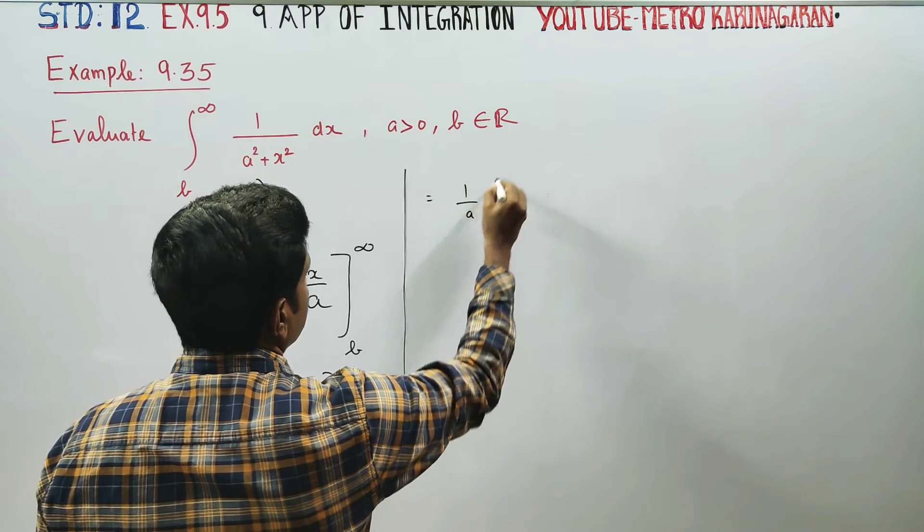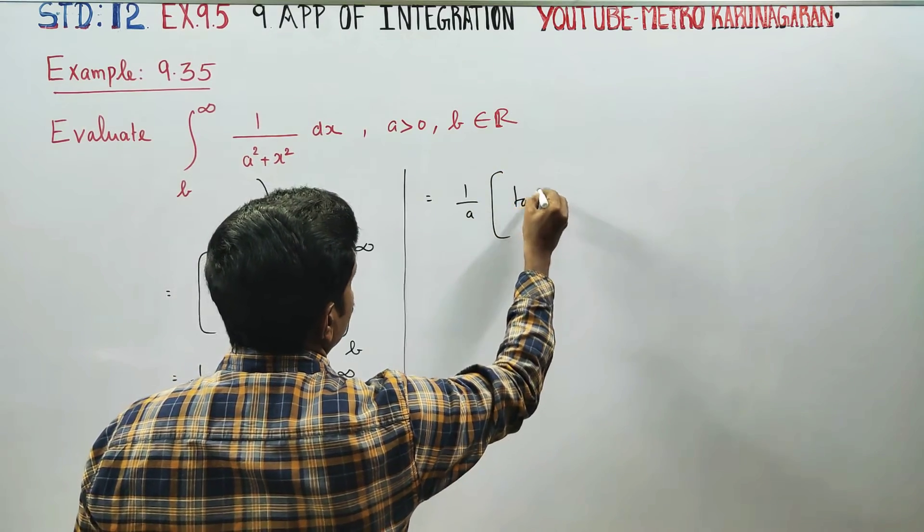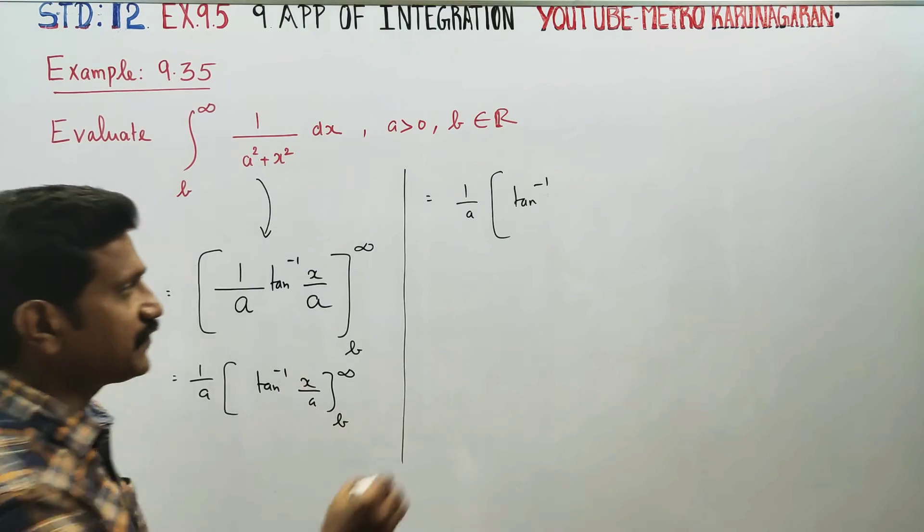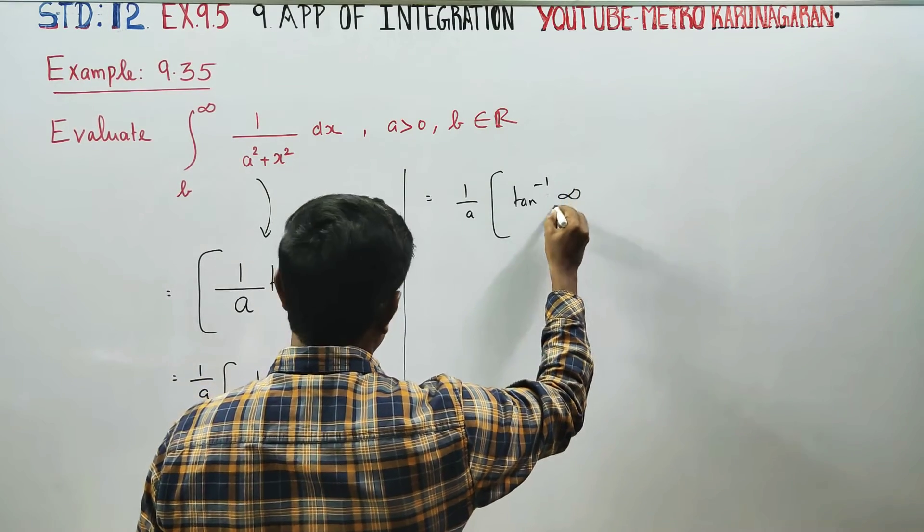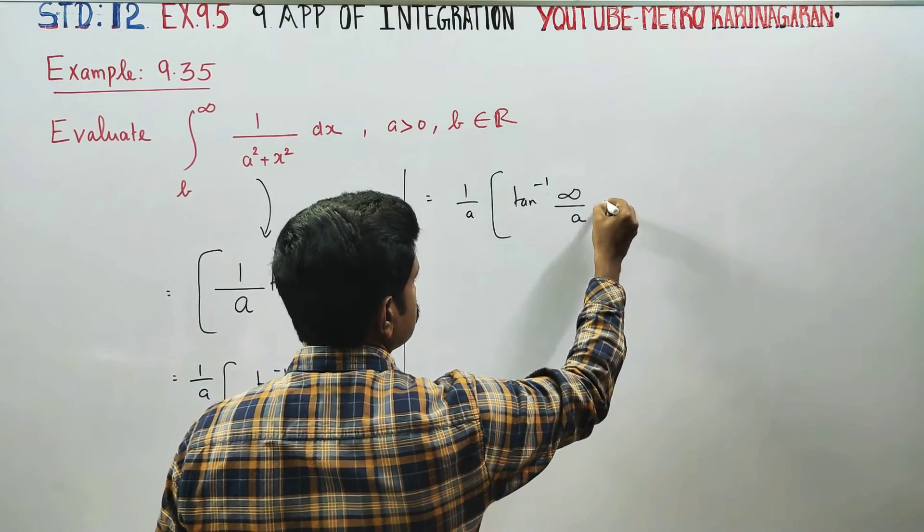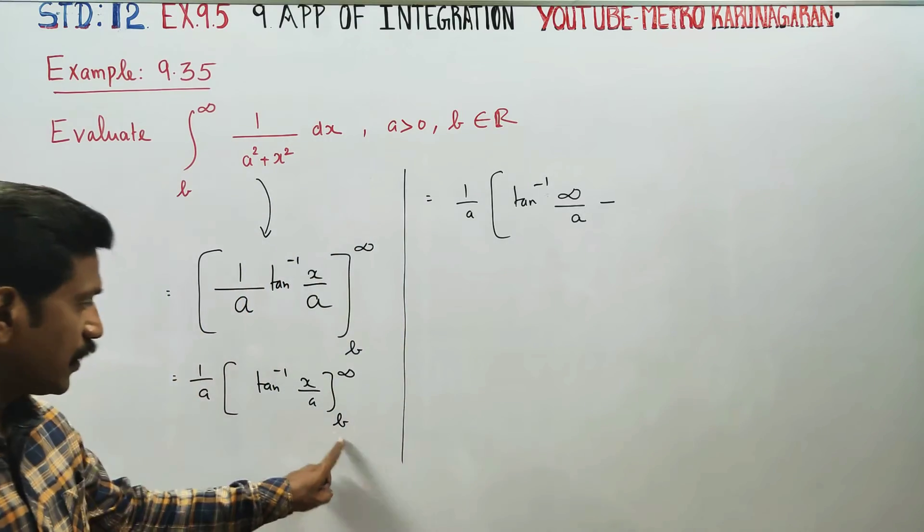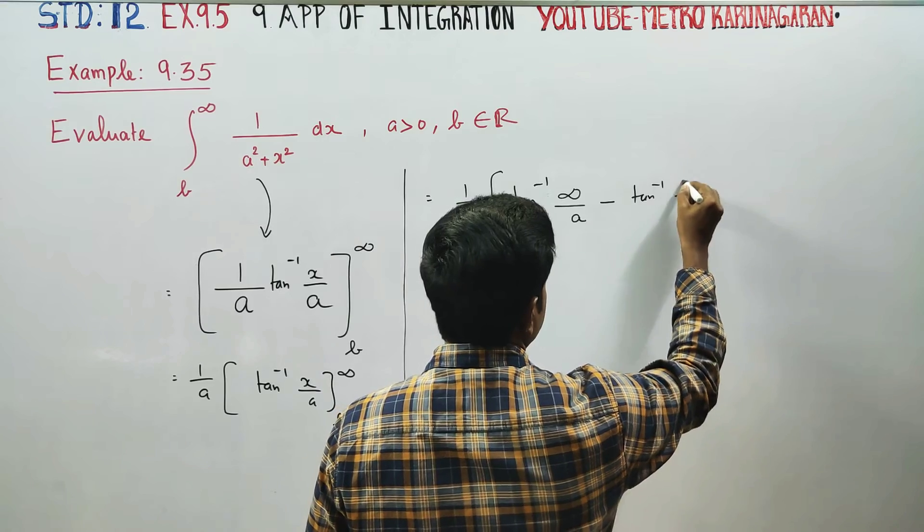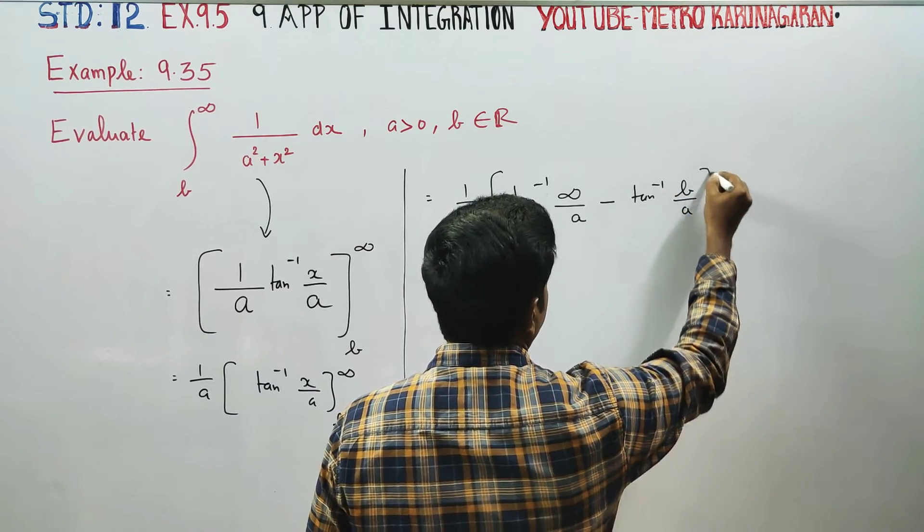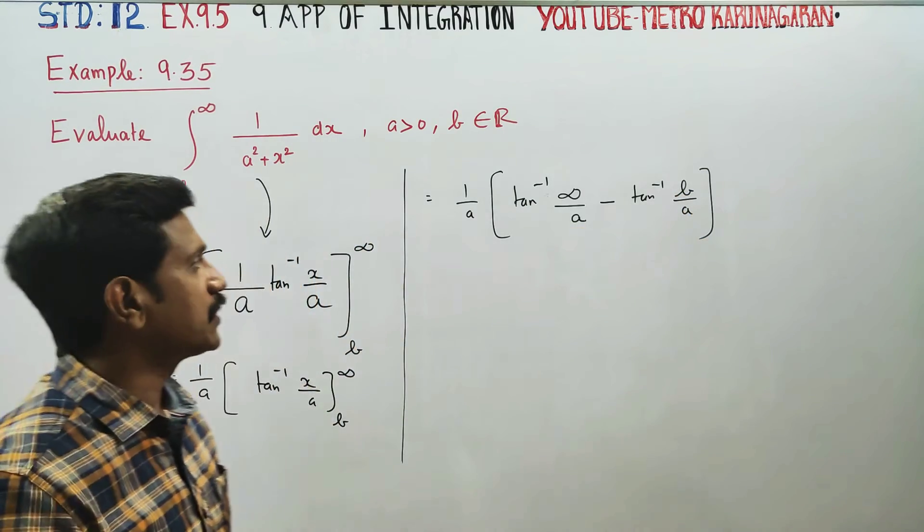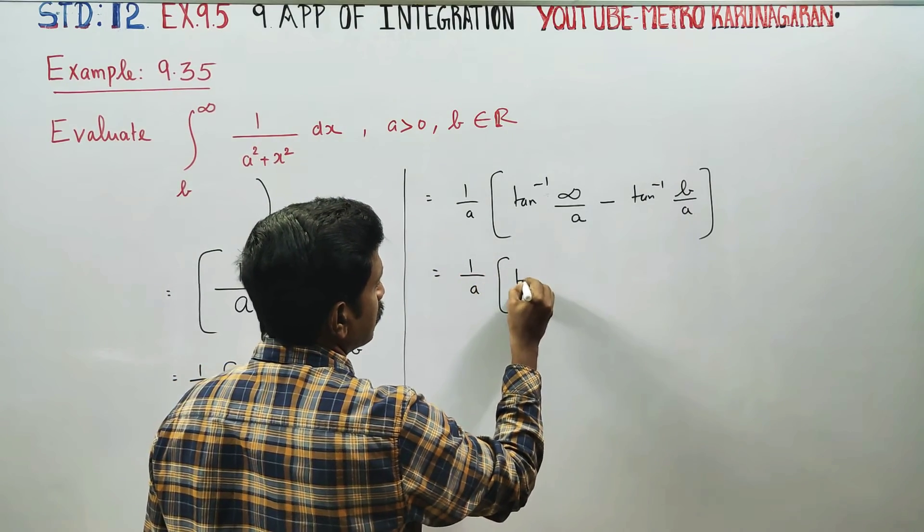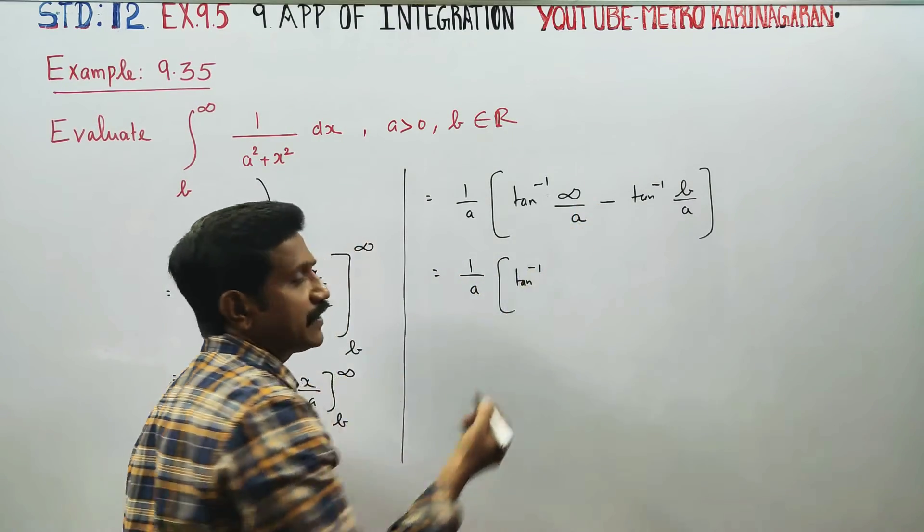1/a tan inverse of, first upper limit - the upper limit is infinity. When we substitute infinity: infinity/a minus lower limit. The lower limit is b, so tan inverse of b/a.